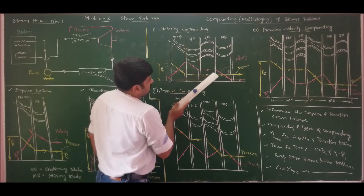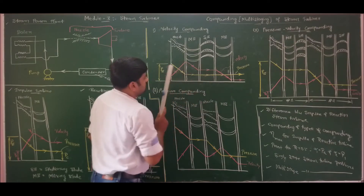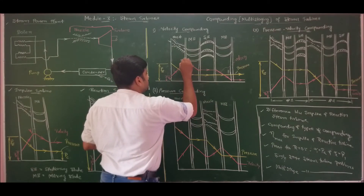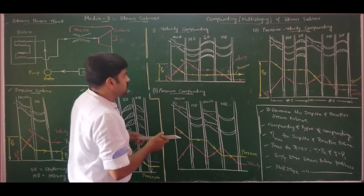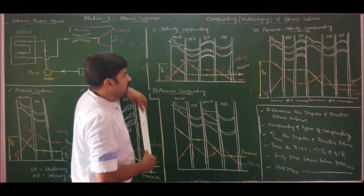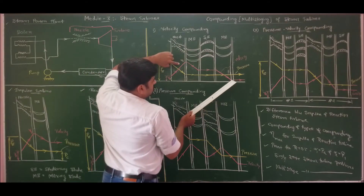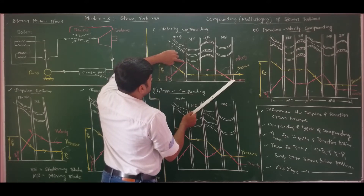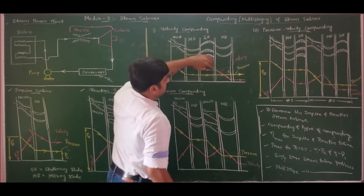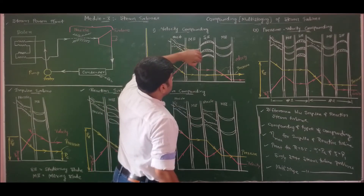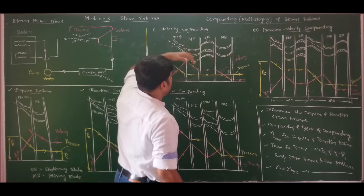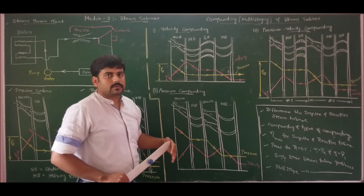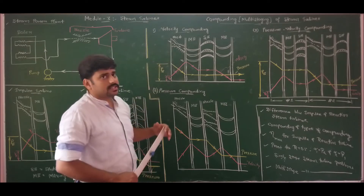We are making maximum utilization of the steam. The entry point to the moving blade has absolute velocity V1. This is the working principle of velocity compounding.